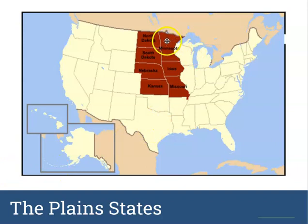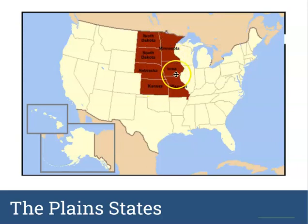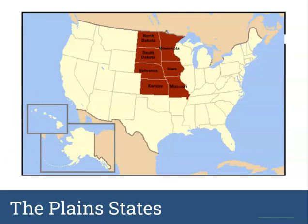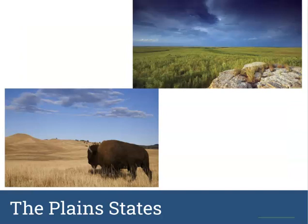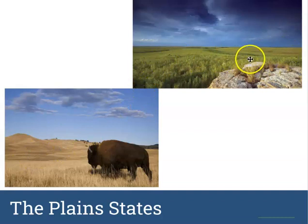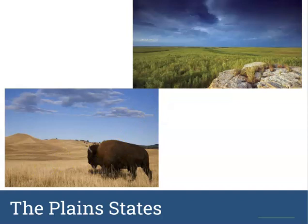Now we're onto the Plain States. Minnesota technically touches a lake so it is a Great Lakes state, but these Plain States don't touch the lakes at all and are going to be pretty flat. You can see a lot of flat, grassy areas with not a ton of trees — that's what the Plain States really look like.